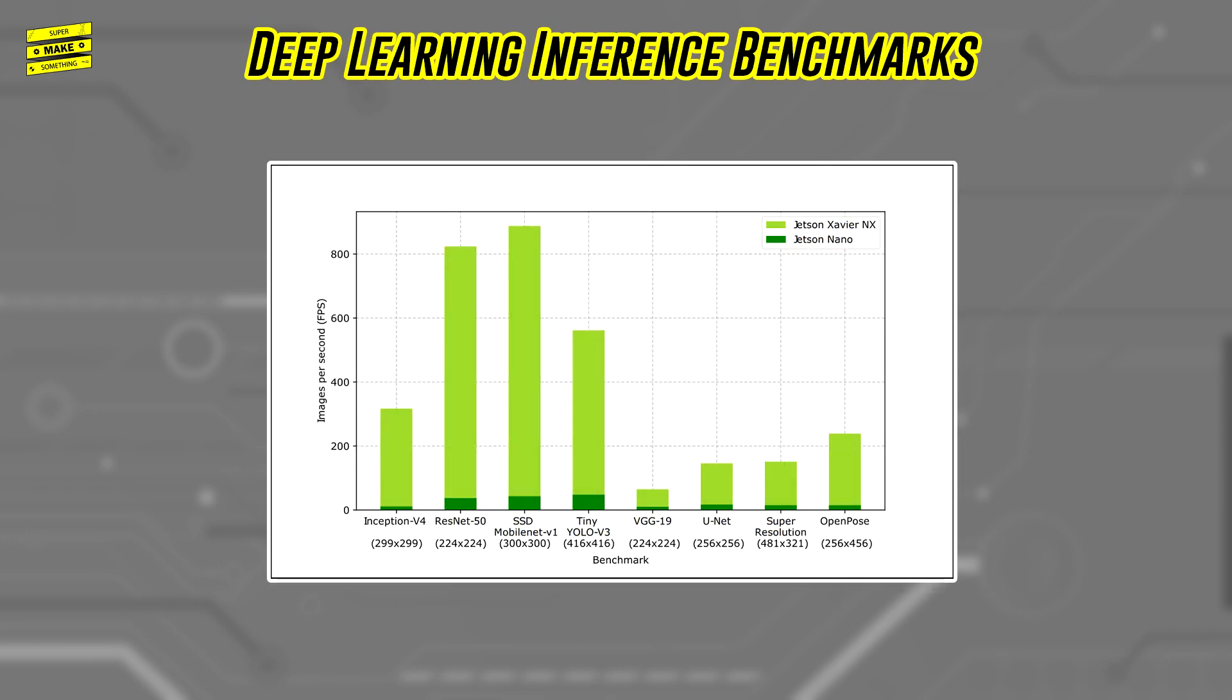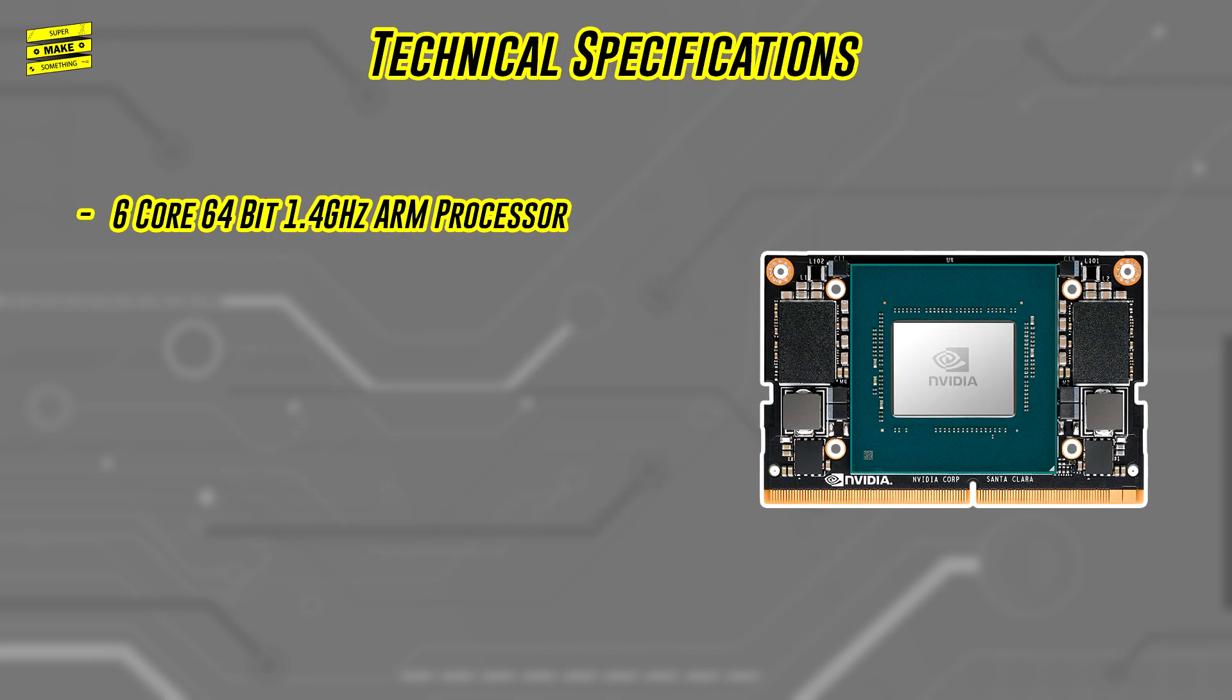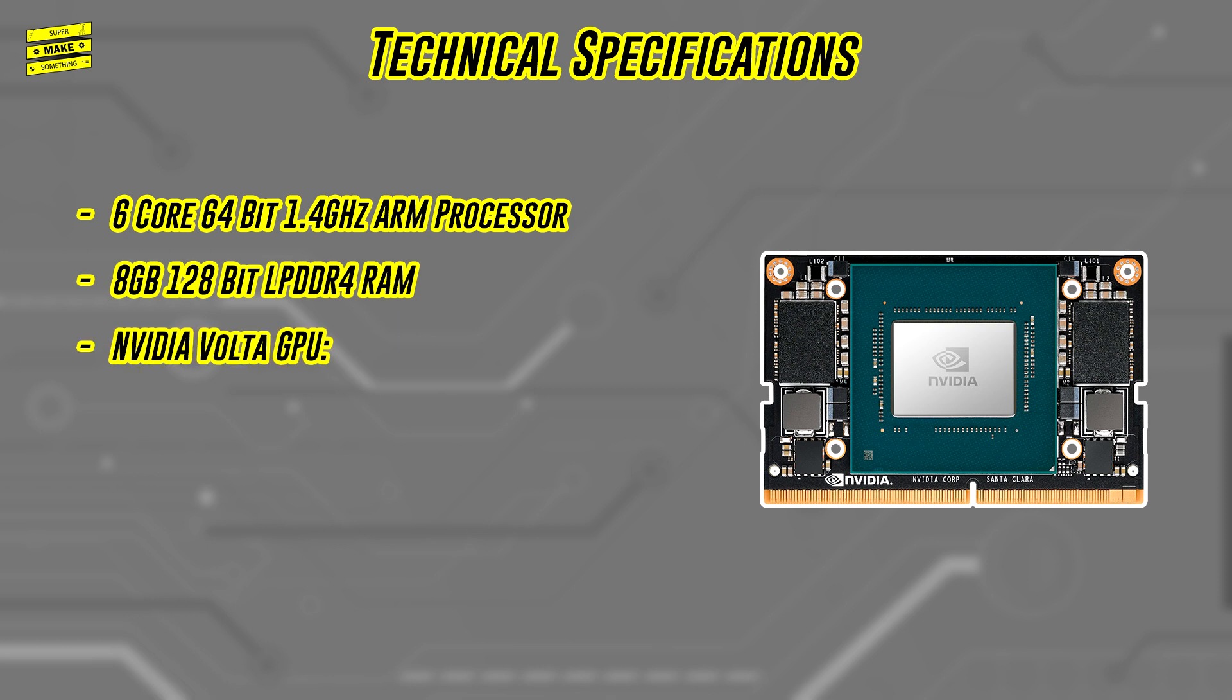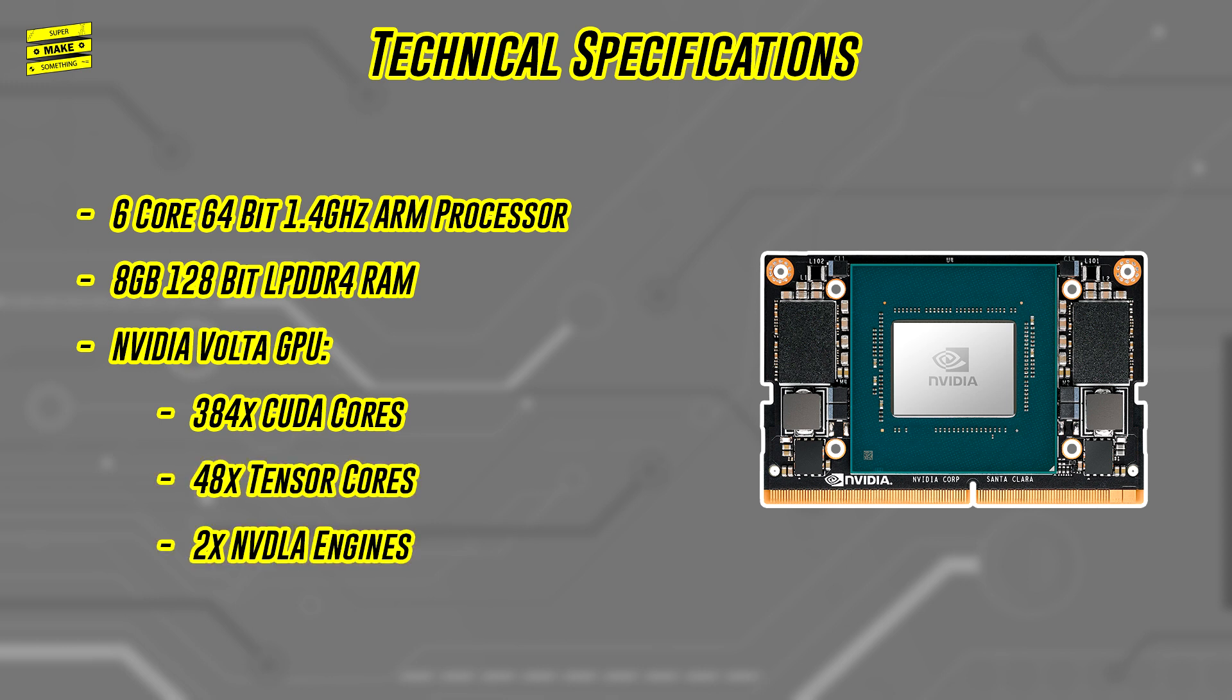It has between 6 and 28 times faster performance thanks to its 6-core 64-bit 1.4GHz ARM processor, 8GB of LPDDR4 RAM, and an NVIDIA Volta GPU with 384 CUDA cores, 48 Tensor cores, and two deep learning accelerator engines.